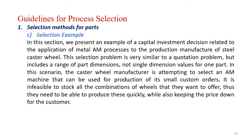Next we will look at a scenario where we do selection by example. In this section we will represent an example of a capital investment decision related to the application of AM process for the production of a steel caster wheel. This selection problem is very similar to a quotation problem, but it includes a range of part dimensions, not a single dimension value for one part. The caster wheel manufacturer is attempting to select an AM machine that can be used for production of its small custom orders.